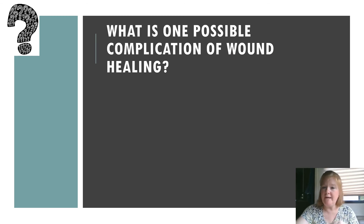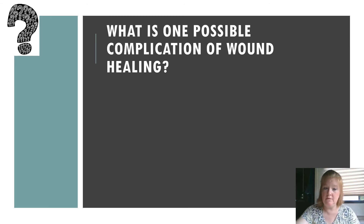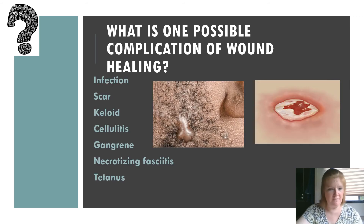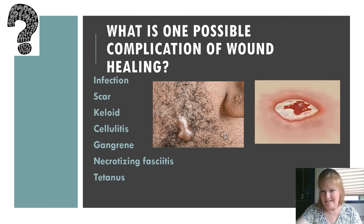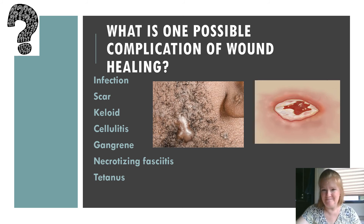What is one possible complication of wound healing? There were many: infections, scars, keloid, cellulitis, gangrene, necrotizing fasciitis, and tetanus — lots of options, none of them good. With infections, they can be treated with antibiotics.